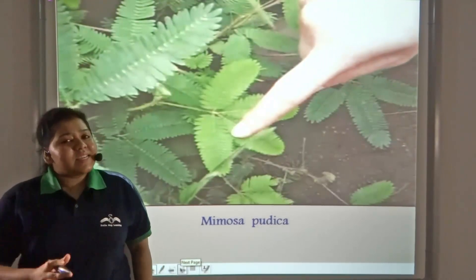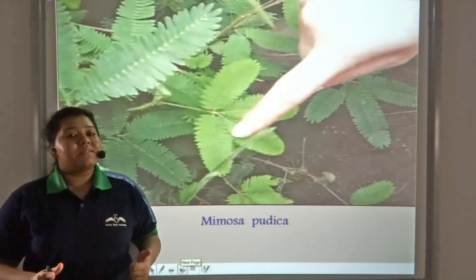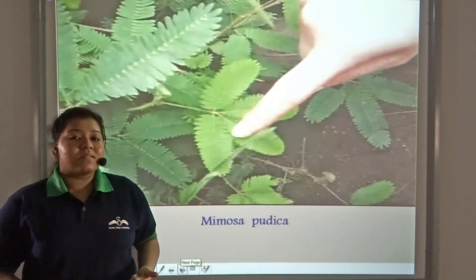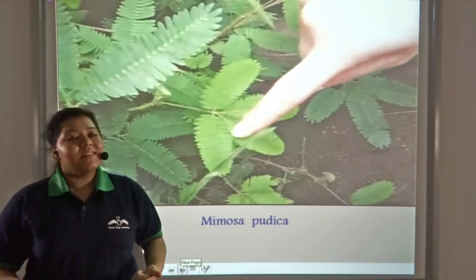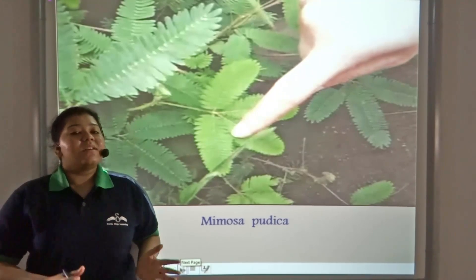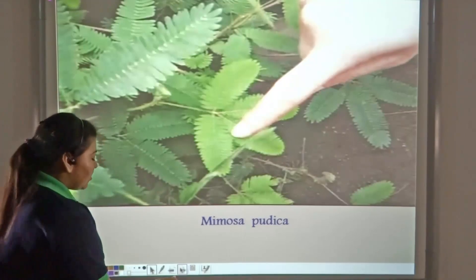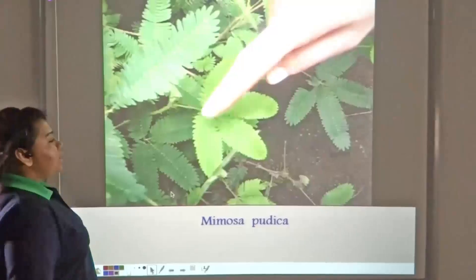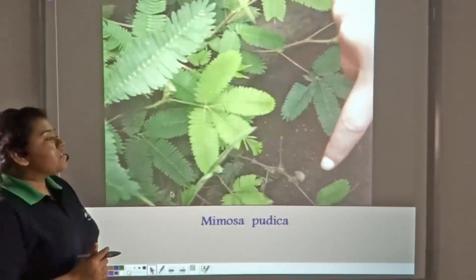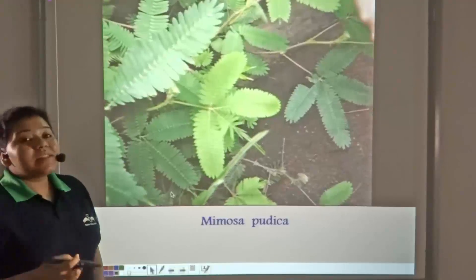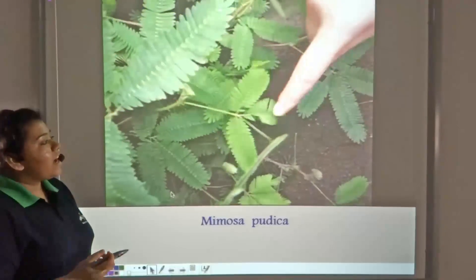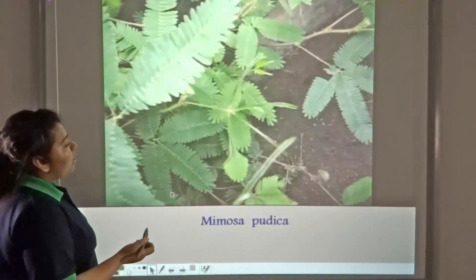But plants neither have a nervous system nor do they have muscles. But how do they still give responses to different stimuli such as touch? If you touch the leaves of Mimosa pudica, it will immediately fold and droop. How does this happen?